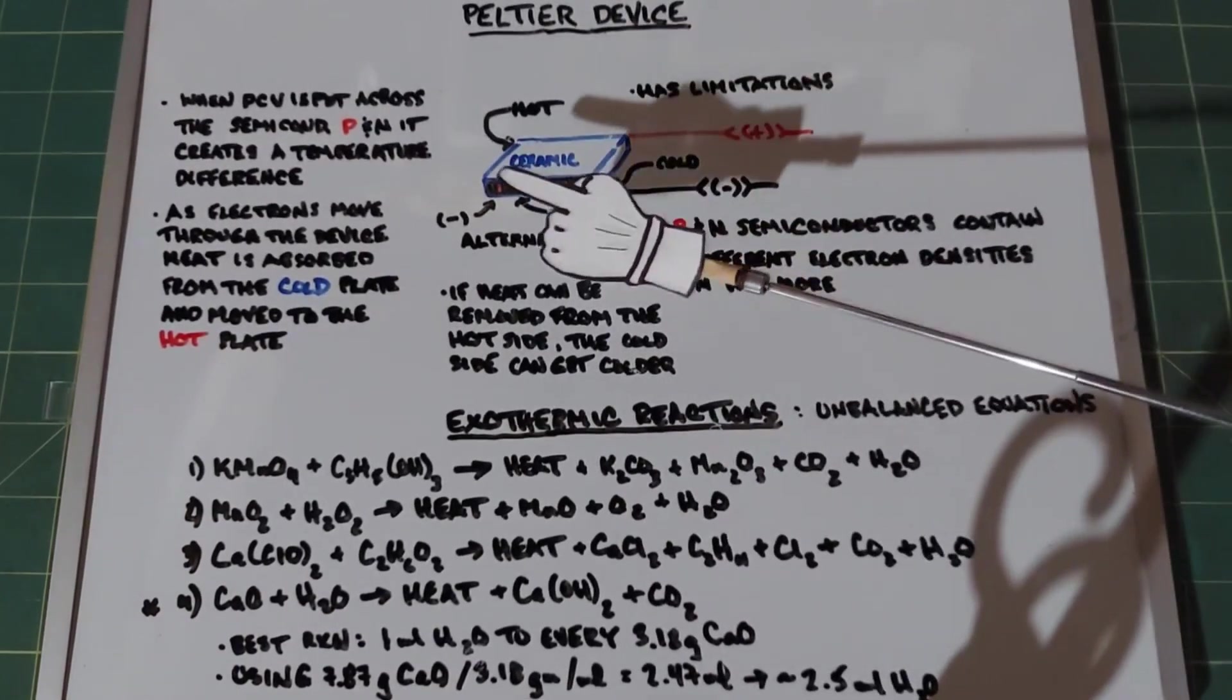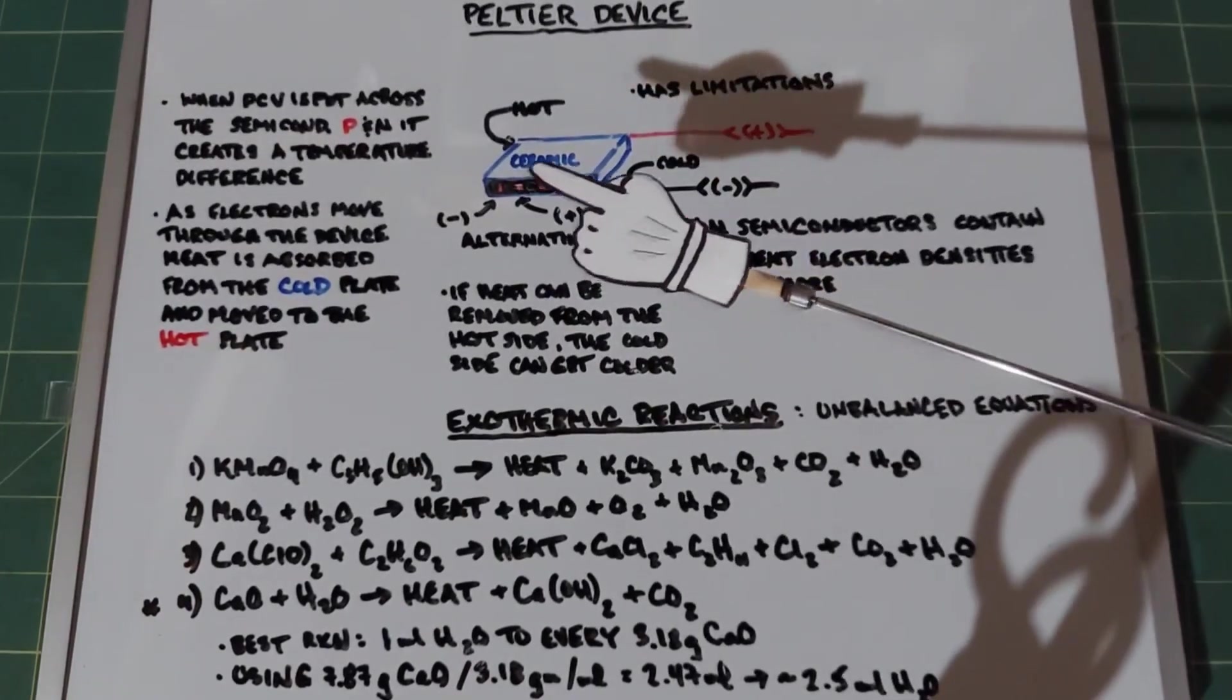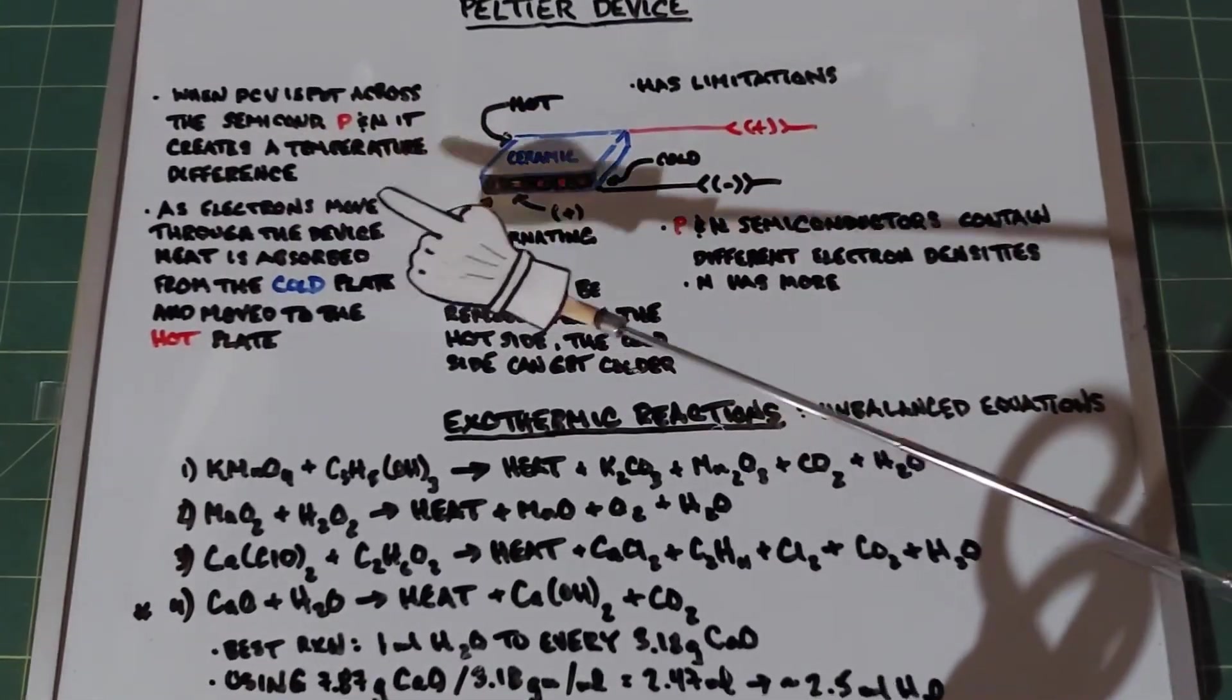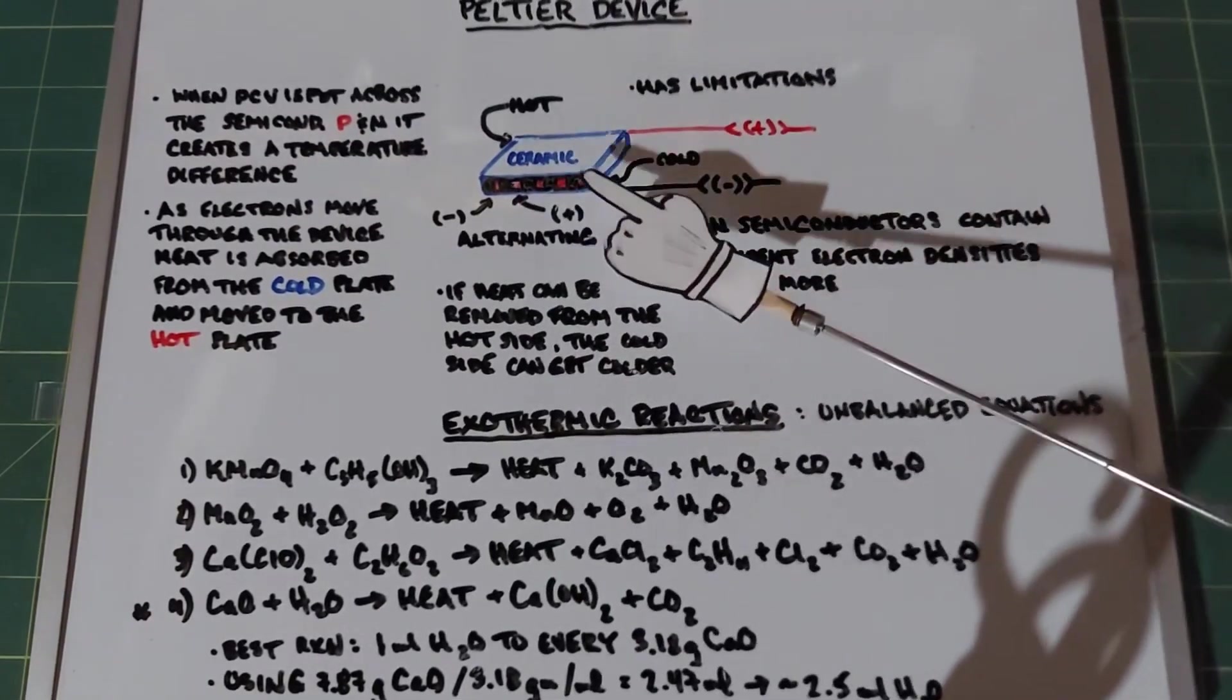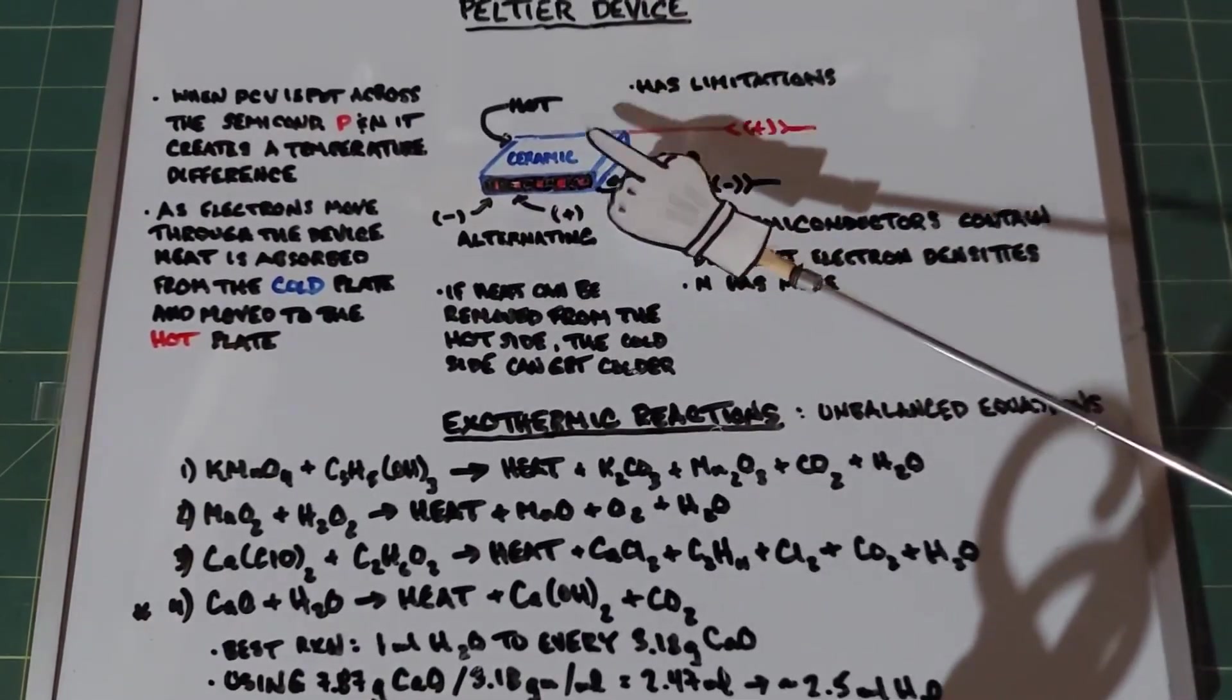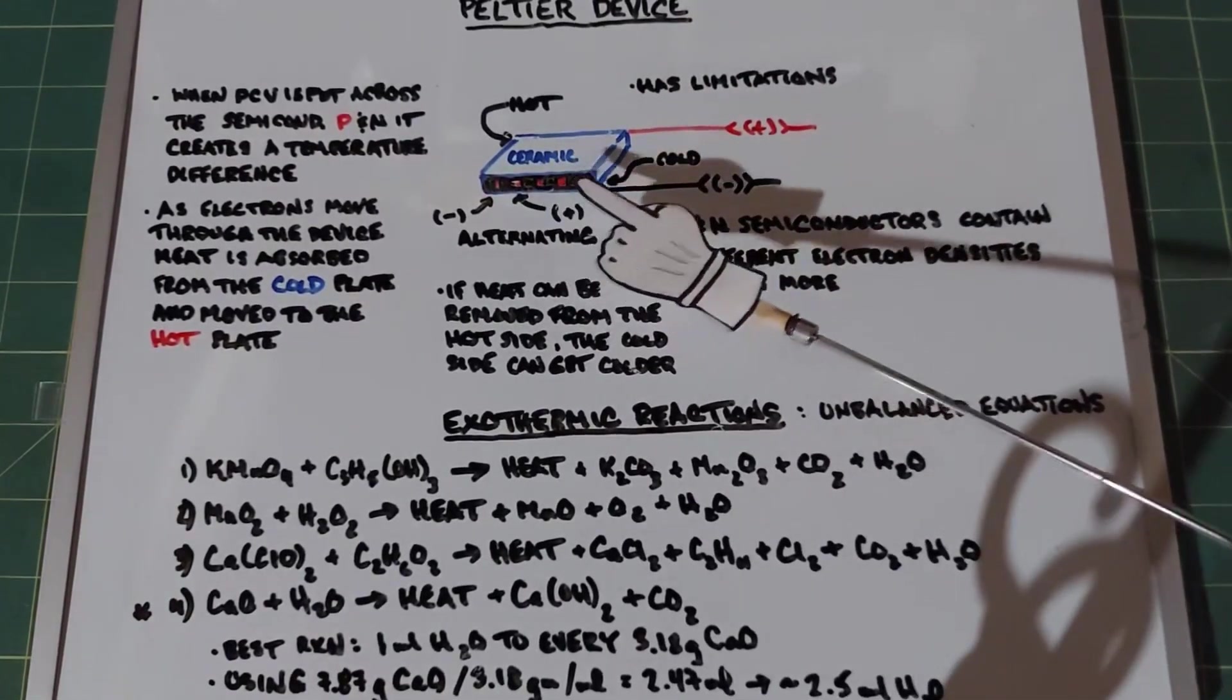These little semiconductor pods are spread throughout between these two ceramic discs. When a DC voltage is put across the semiconductors P and N, it creates a temperature difference. When you turn the power on, electrons start to jump from low to high, then high to low, across this whole thing. When that happens, it's creating heat. Electrons moving through a wire creates heat.